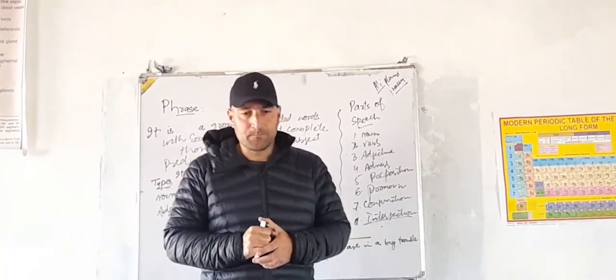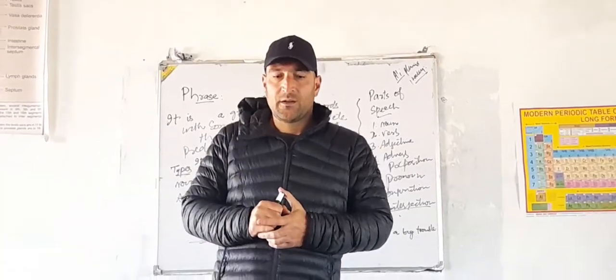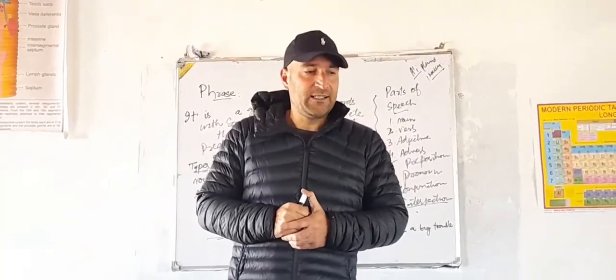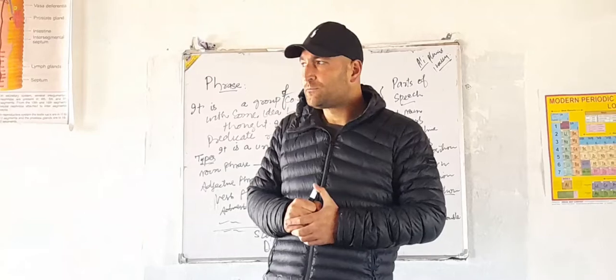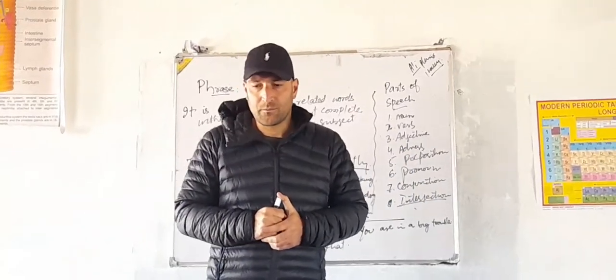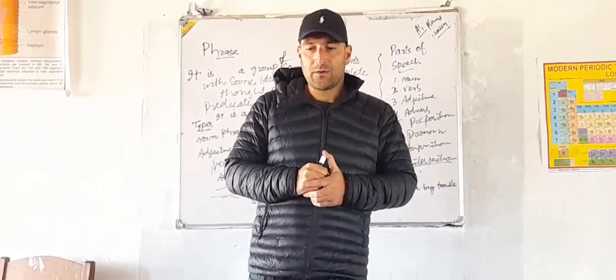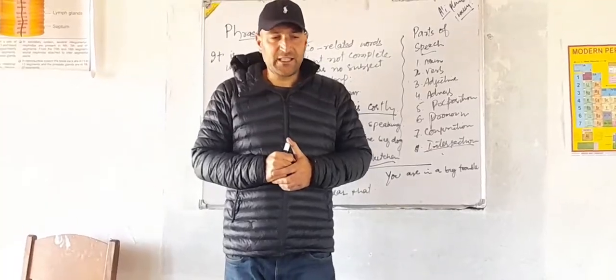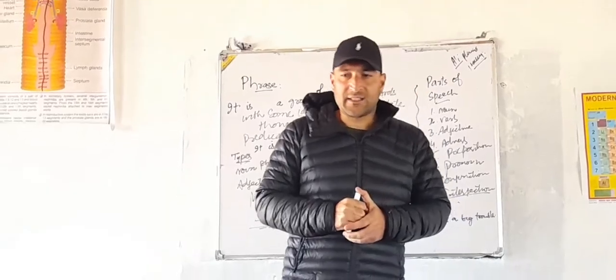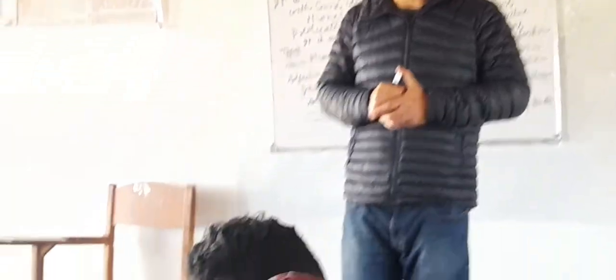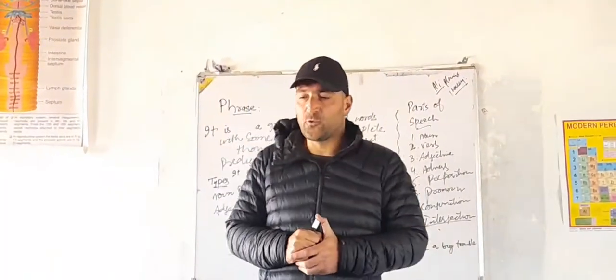Write down homework. Write twenty sentences. Write twenty sentences and encircle the phrases used. E-N-C-I-R-C-L-E. And encircle the phrases used.